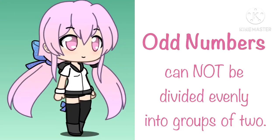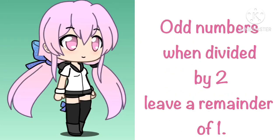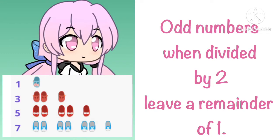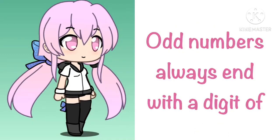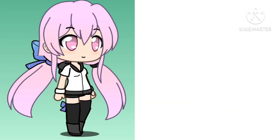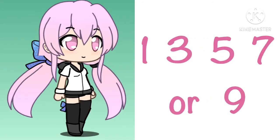Odd numbers cannot be divided evenly into groups of two. Odd numbers when divided by two leave a remainder of one. Odd numbers always end with a digit of one, three, five, seven, or nine.